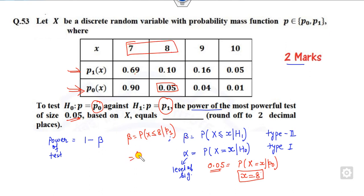So the right answer is 0.79. This is the value of beta. You can substitute the value of beta. So the right answer is my 0.21 is the right answer of this problem.